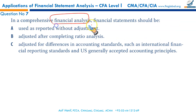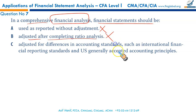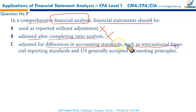In a comprehensive financial analysis, financial statements should not be used as reported without adjustment — adjustments are necessary for comparison purposes. Statements must be adjusted before ratio analysis, not after. They should be adjusted for differences in accounting standards such as GAAP versus IFRS to bring them onto an equal basis for comparison. That makes C the correct option.